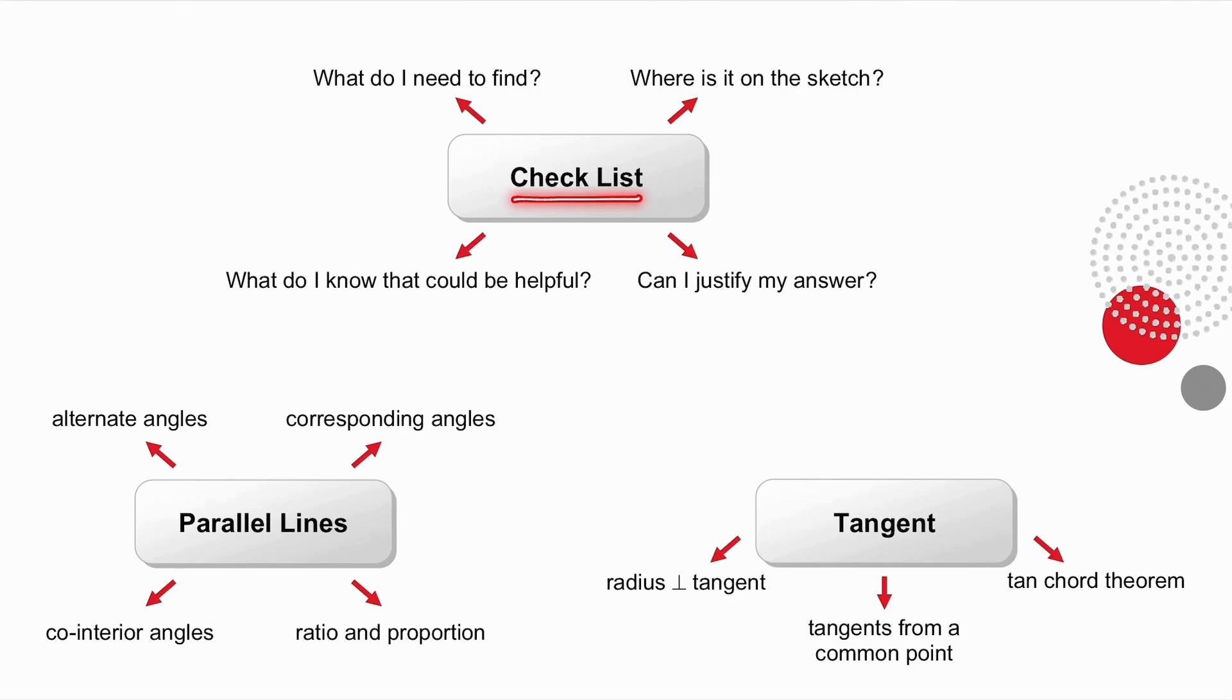Look at your checklist. What do I need to find? Where is it on the sketch? What do I know that could be helpful? And can I justify my answer? They've told you there are parallel lines, so look for alternate angles, corresponding angles, co-interior angles, and look to see if you can use the ratio and proportion theorem.